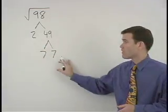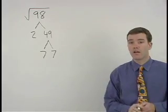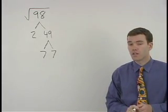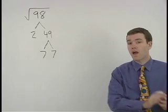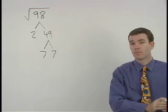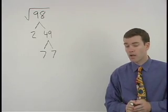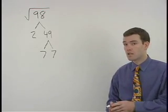What we're looking for in our factor tree are pairs of factors that are the same. If a factor pairs up then it will come out of the radical. If a factor does not pair up then it stays inside the radical.